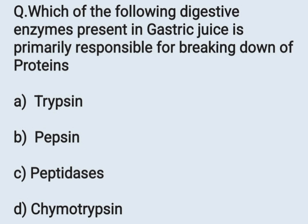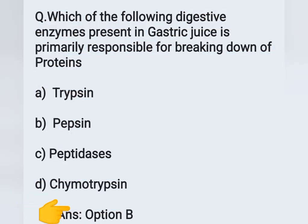First question: Which of the following digestive enzymes present in gastric juice is primarily responsible for breaking down proteins? Option A: trypsin, Option B: pepsin, Option C: peptidase, Option D: chymotrypsin. The correct answer is pepsin — Option B is the correct answer.